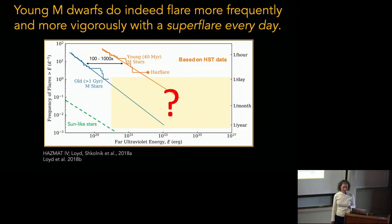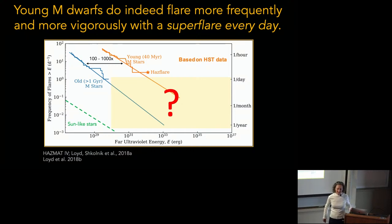Magnetic field is one factor — through convection. The field also goes down as the rotation goes down: flare rates go down, flare energies go down, rotation period gets longer. Yes, all of that is connected.